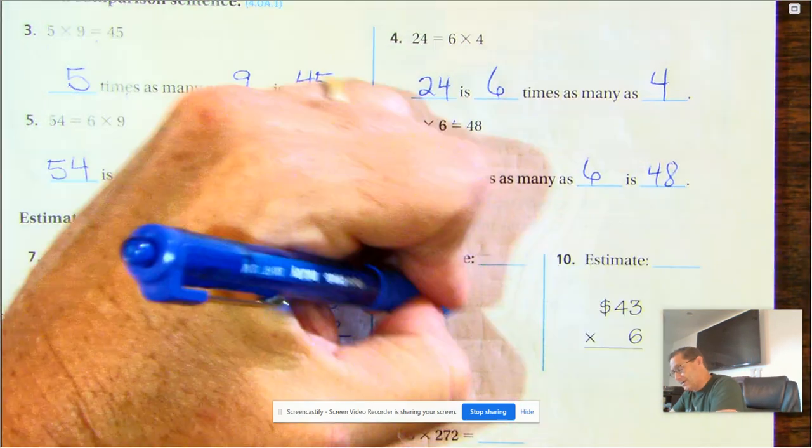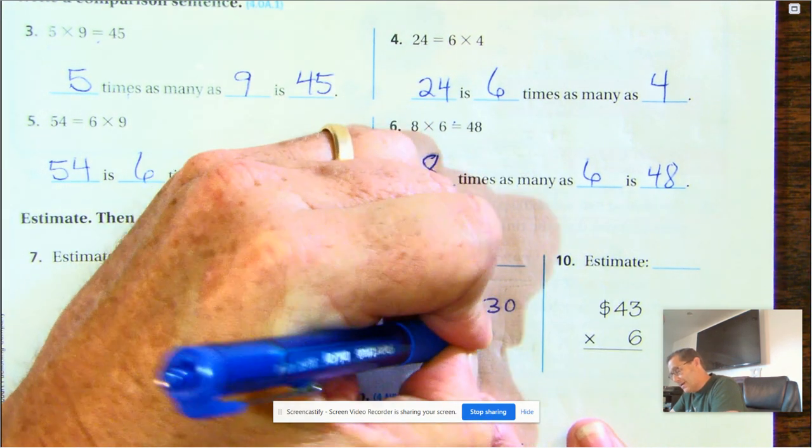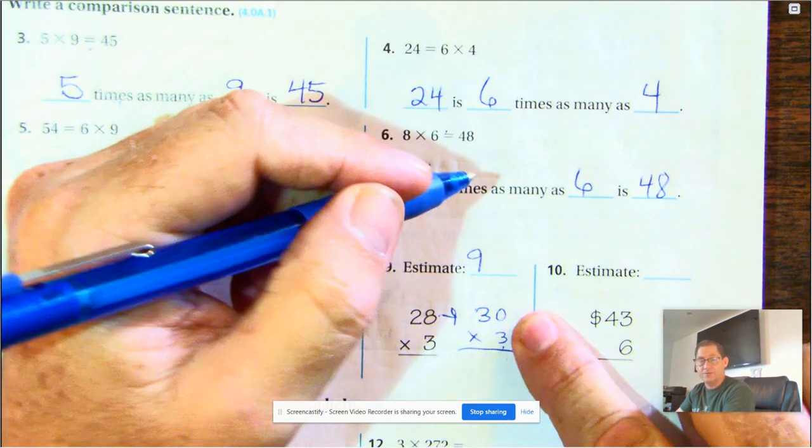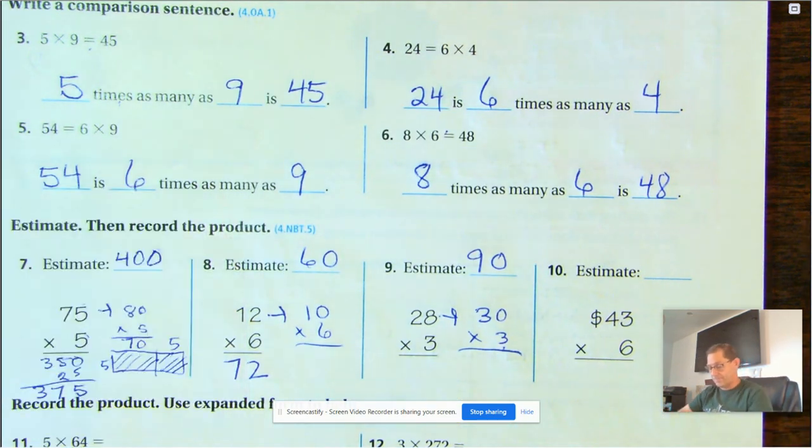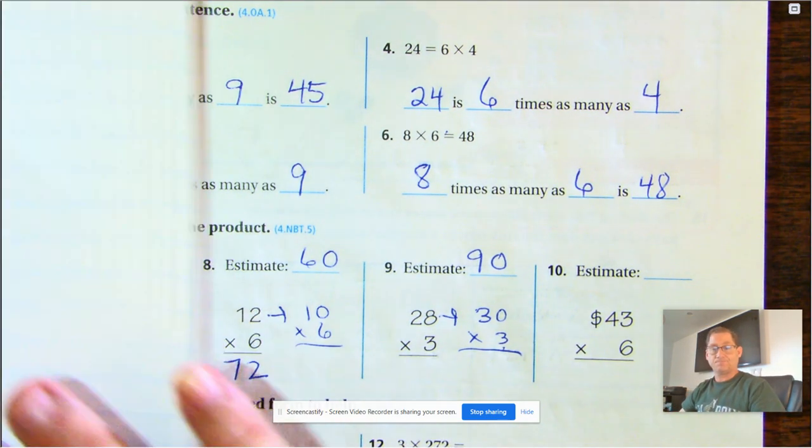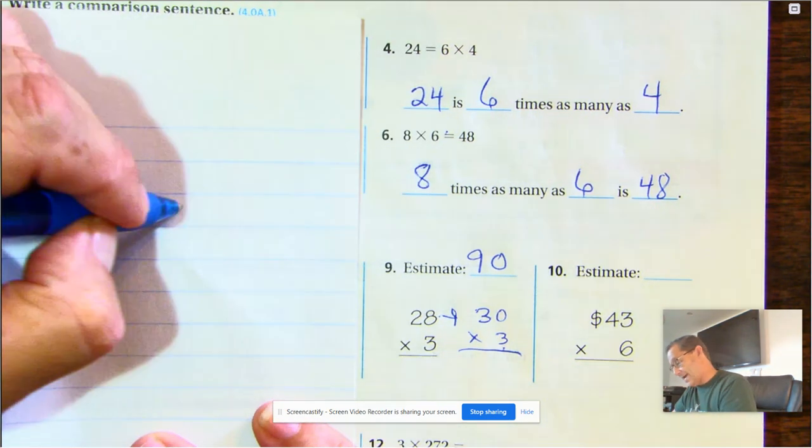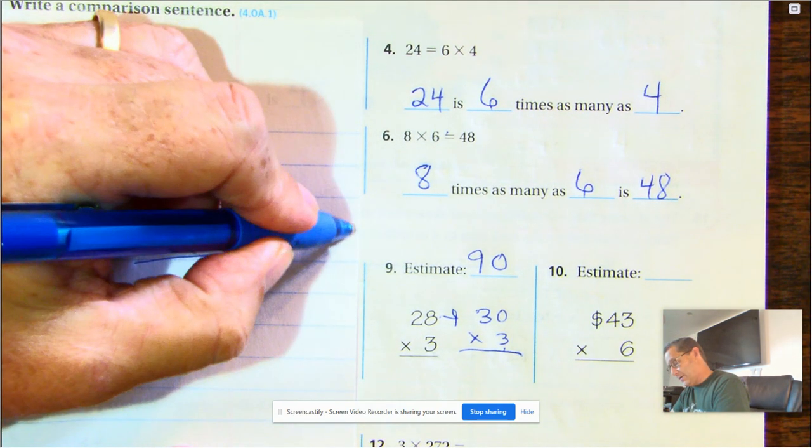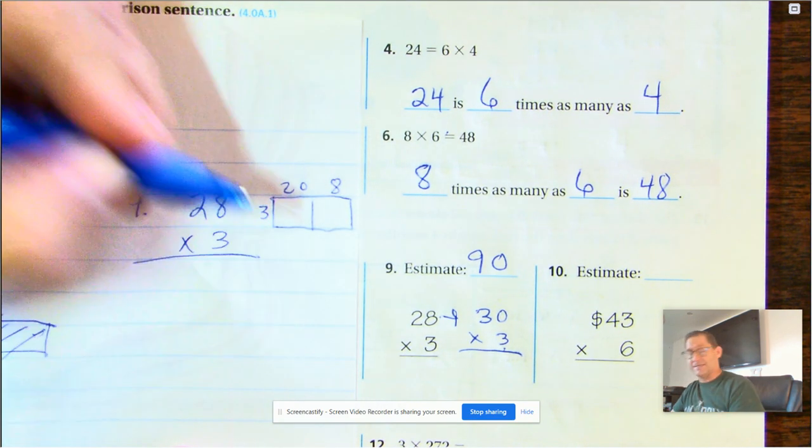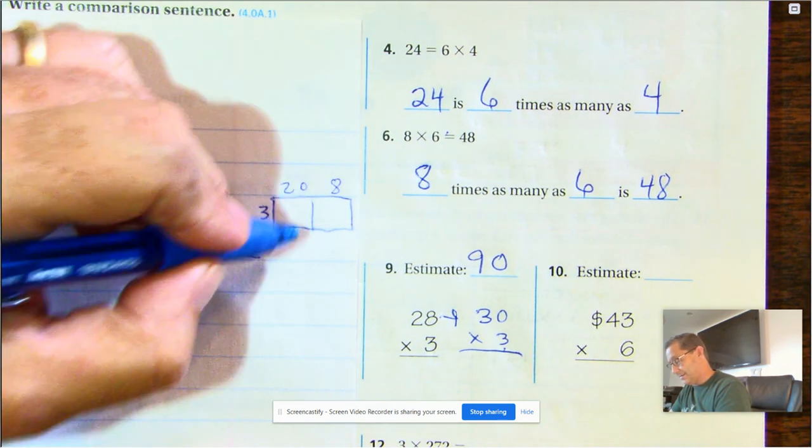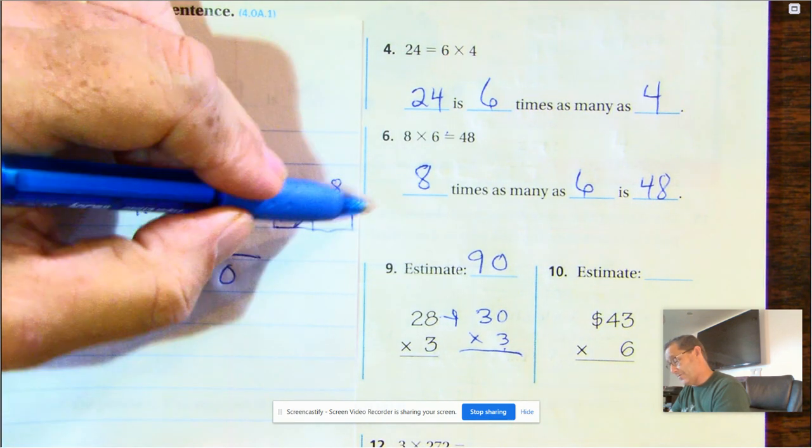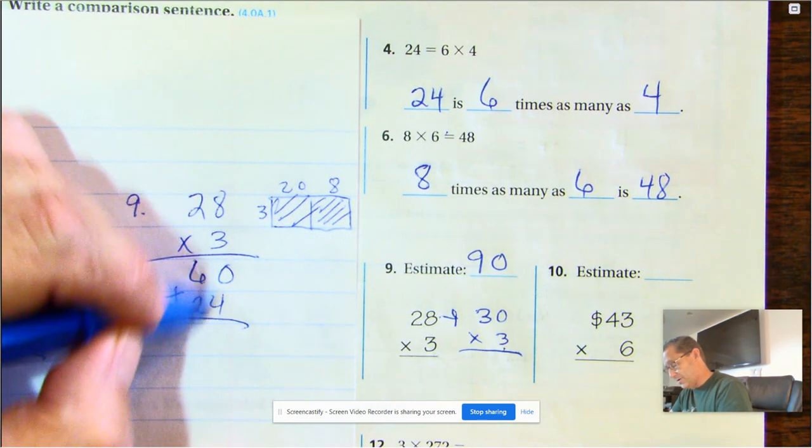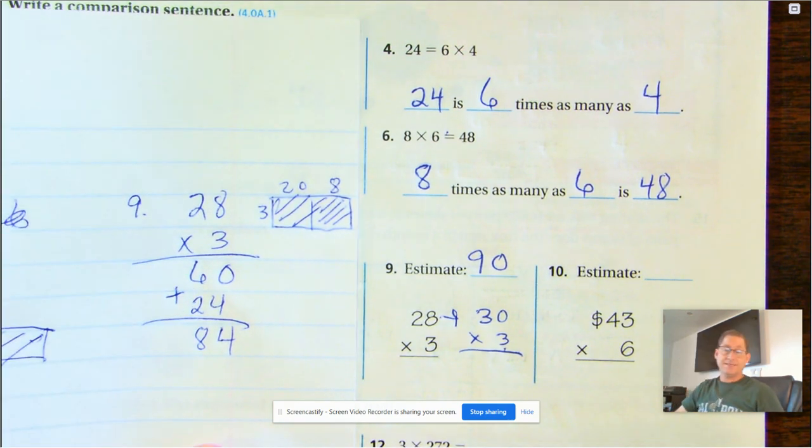Number nine. 28 is close to 30 times 3. Basic math fact. 3 times 3 is 9. Put the zero from the three tens. Okay. Now let's solve that on our paper. So we have 28 times 3. So I'm going to split up 28. That's 20 plus 8, and then it's times 3. So 3 times 20 is 60, and 3 times 8 is 24. And so I'll add those together by place value. 4. 6 tens and 2 tens is 8 tens. 84.